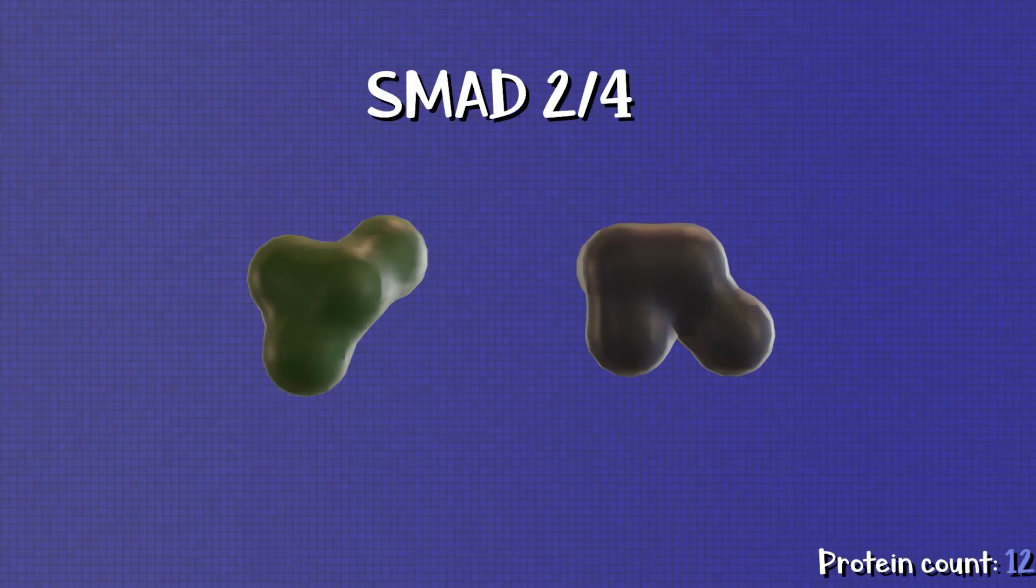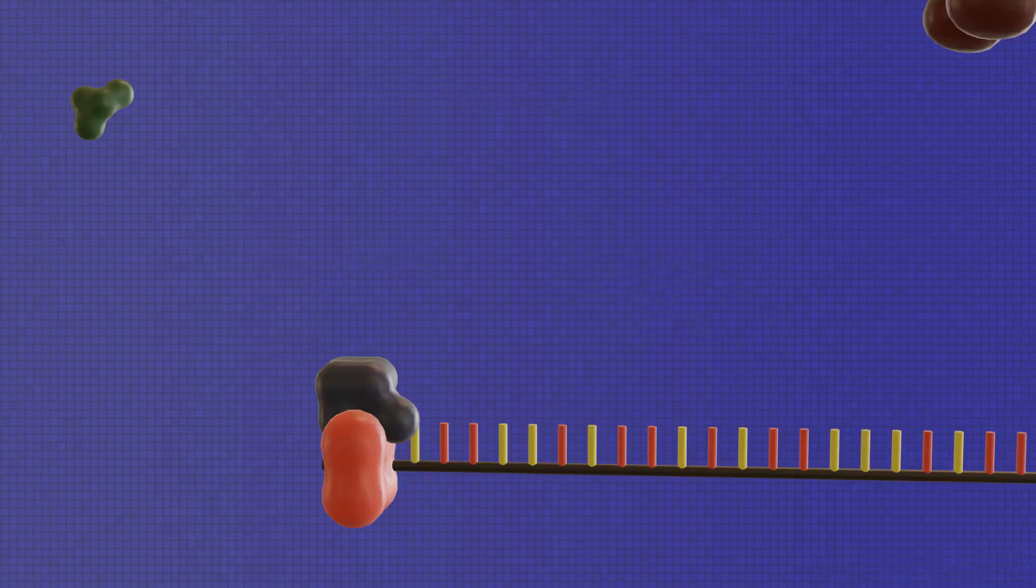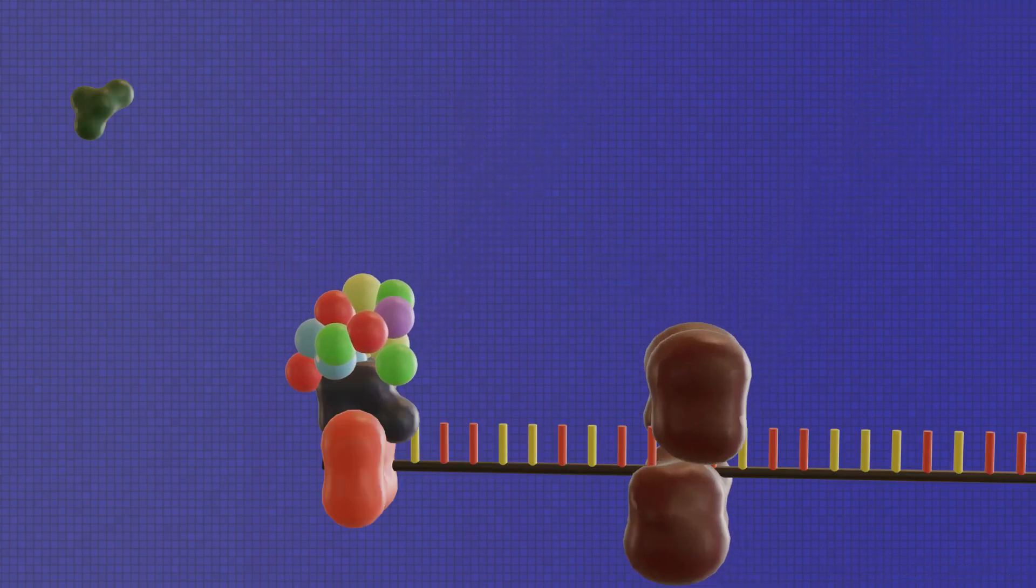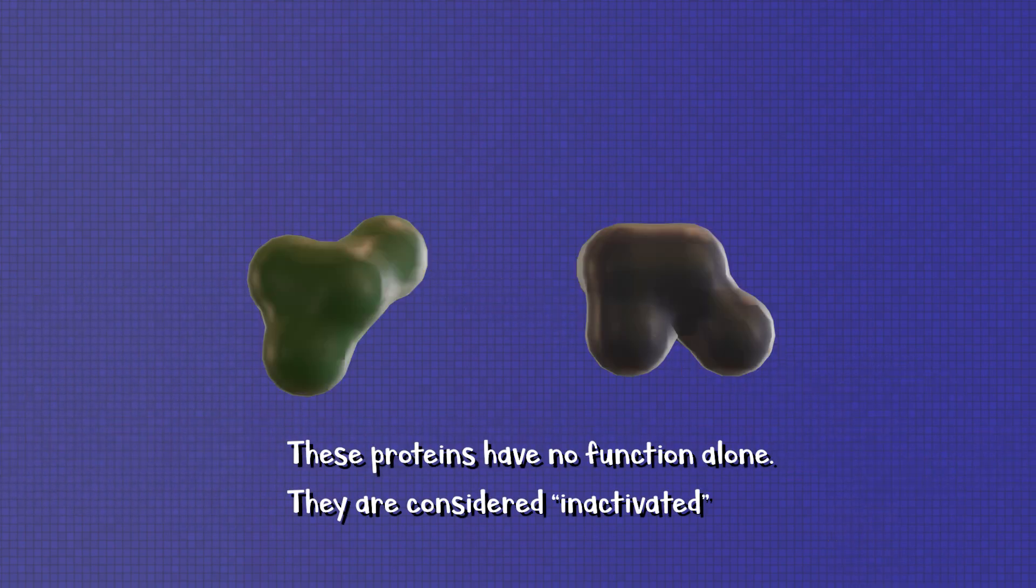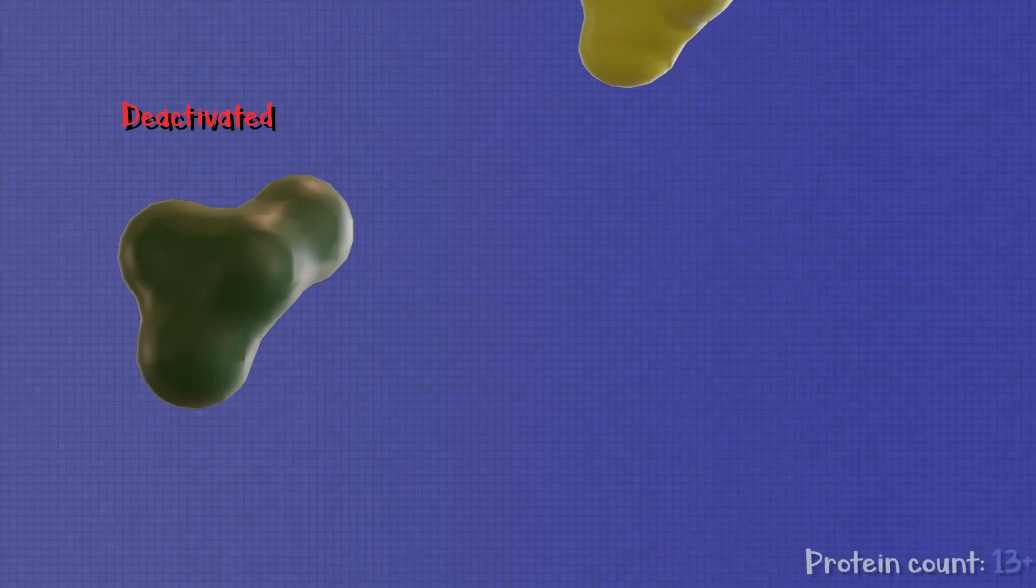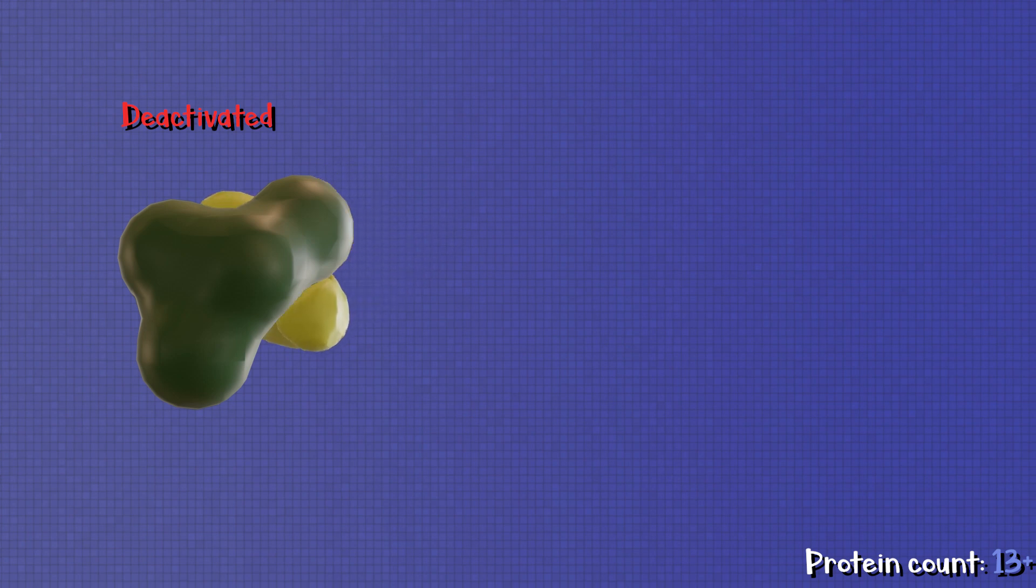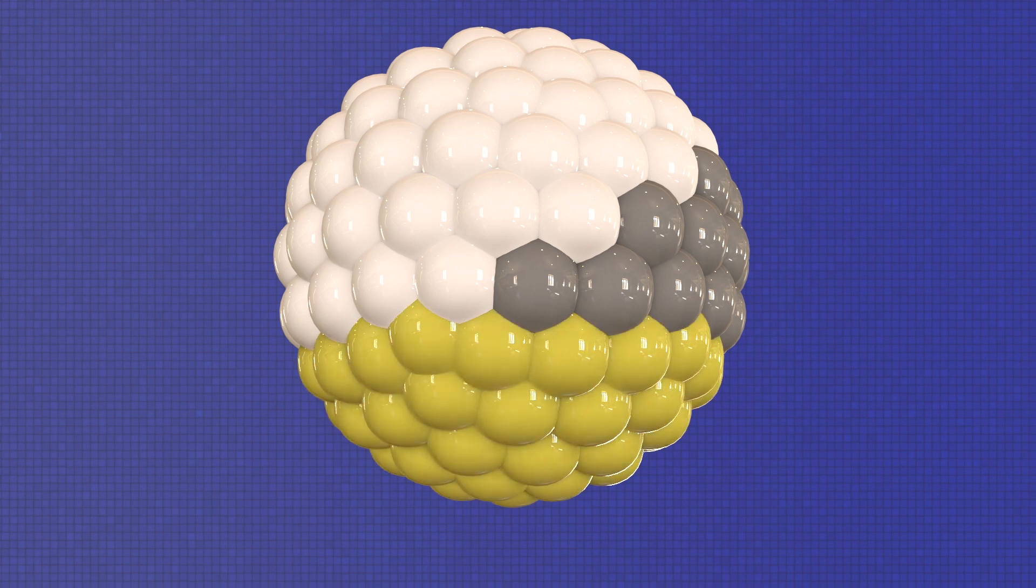You see, there's another set of proteins called SMAD2-4 that can work in conjunction with siamese and twin to activate mesoderm genes. But guess what? There's another problem. SMAD2 and 4 are normally deactivated and need another group of paracrine factors to activate them. And in another instance of unnecessary complexity, those proteins are only created in the vegetal region.